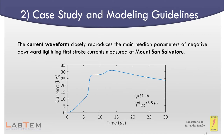The current waveform shown in the figure has been adopted in the simulations. This waveform closely reproduces the main median parameters of negative downward lightning first stroke current measured at Mount San Salvatore. This waveform is modeled as the sum of Heidler functions. The first stroke current is characterized by a peak value of 31 kA and a virtual front time of 30.8 microseconds.